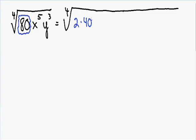Forty can be factored even further so I'm going to erase this forty and rewrite it as two times twenty. Twenty can be factored even further, so I'm going to erase the twenty and rewrite it as two times ten.